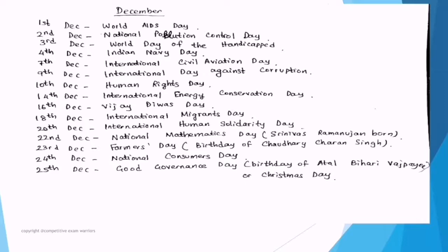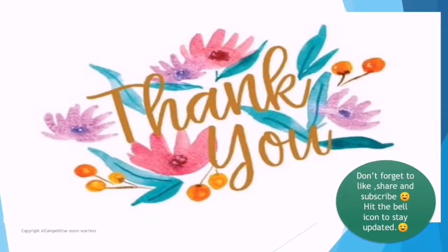Continuing December: 14th December — International Energy Conservation Day. 16th December — Vijay Diwas. 18th December — International Migrants Day. 20th December — International Human Solidarity Day. 22nd December — National Mathematics Day, on account of the birthday of Srinivasa Ramanujan, the famous mathematician. 23rd December — Farmers Day (Kisan Diwas), on account of the birthday of Chaudhary Charan Singh. 24th December — National Consumers Day. 25th December — Good Governance Day (birthday of former Prime Minister Atal Bihari Vajpayee) and Christmas Day.